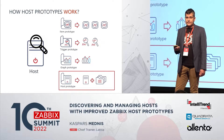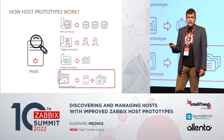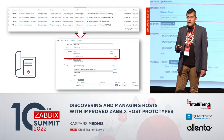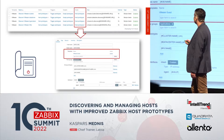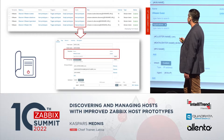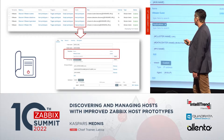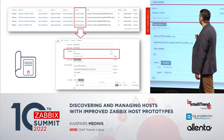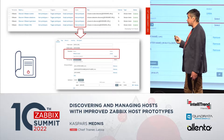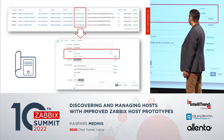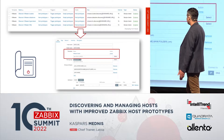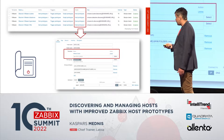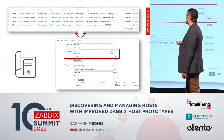This is how it looks in Zabbix: you have the LLD, you have all those item and trigger prototypes, and also in this column you can define the host prototypes. This is how they look — you define a name, a visible name, templates — we will discuss that a little bit later.